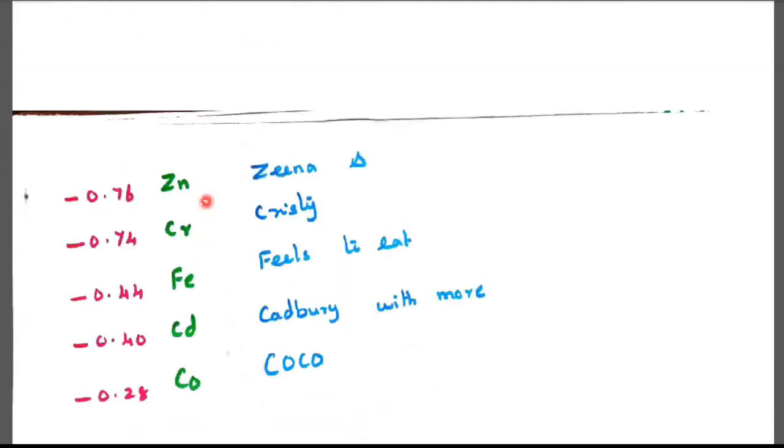Next thing is Zinc Xena, Chromium Cristi, Iron fails to eat Cadmium Cadbury with more cocoa. So Xena and Cristi fails to eat Cadbury with more cocoa.